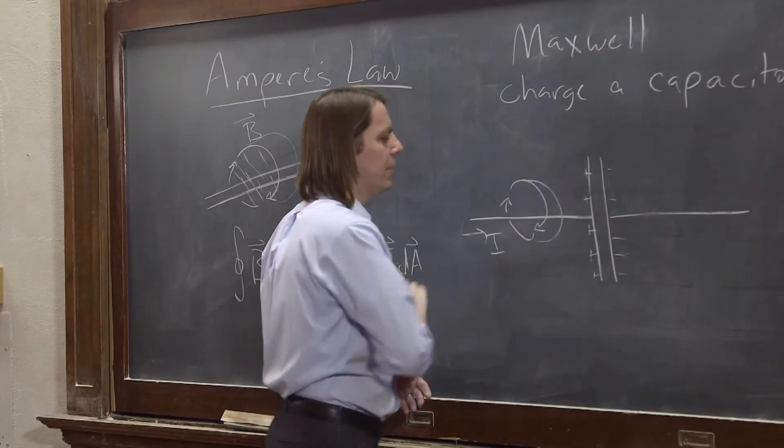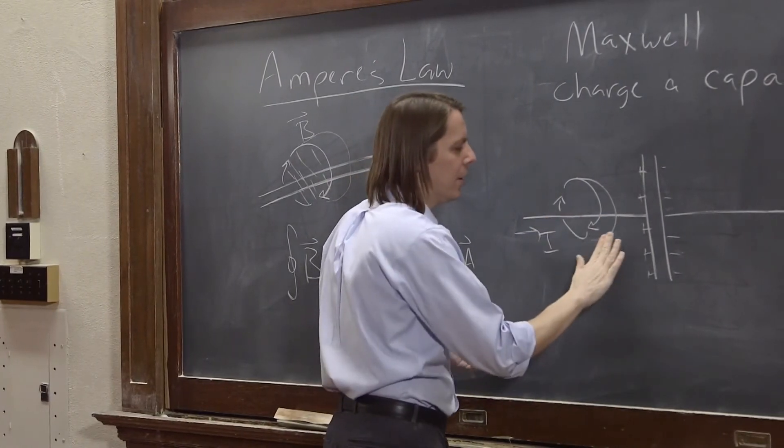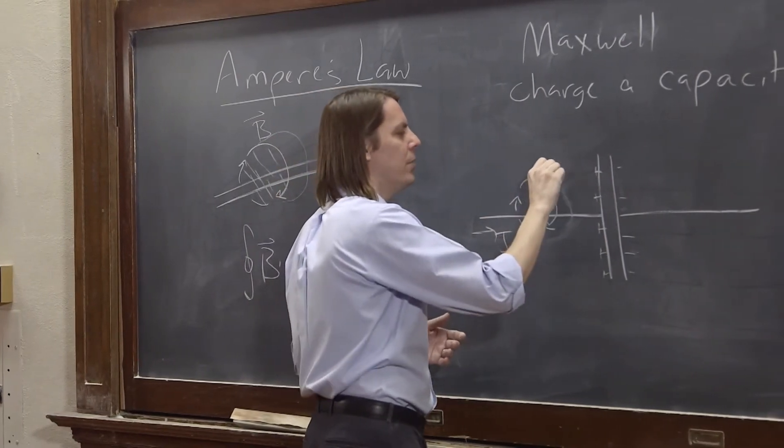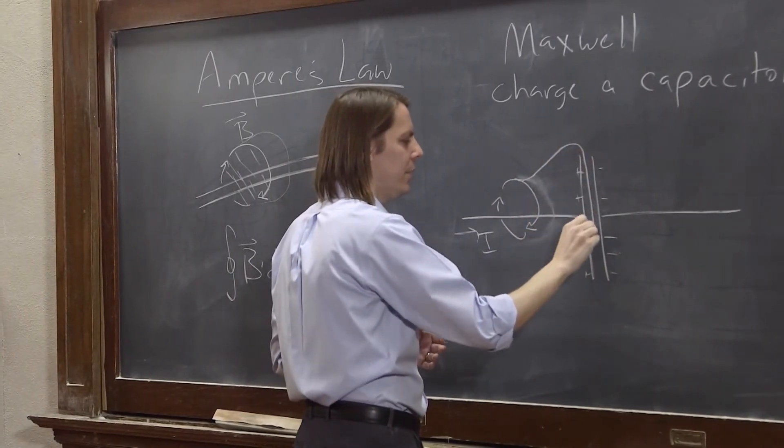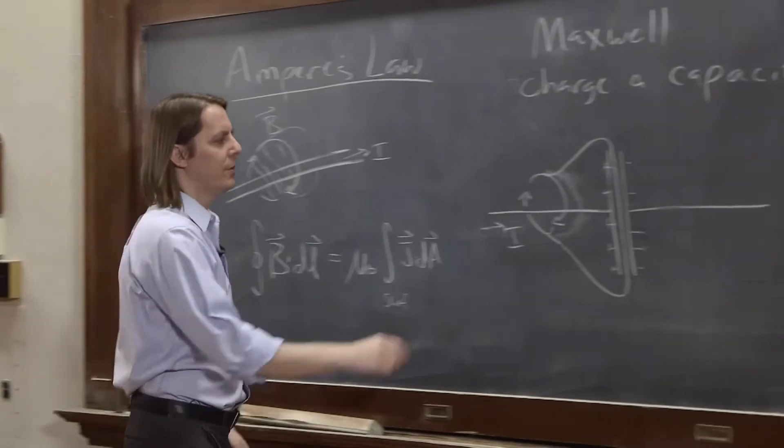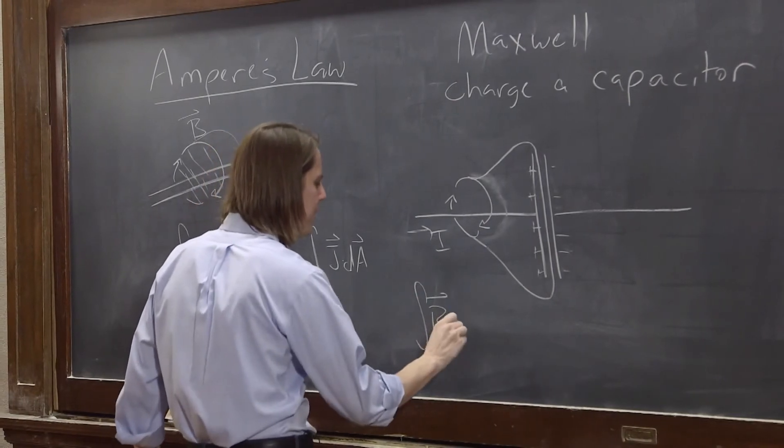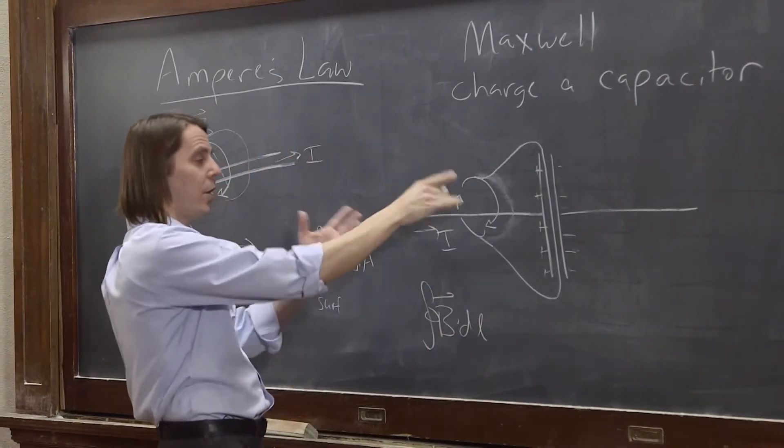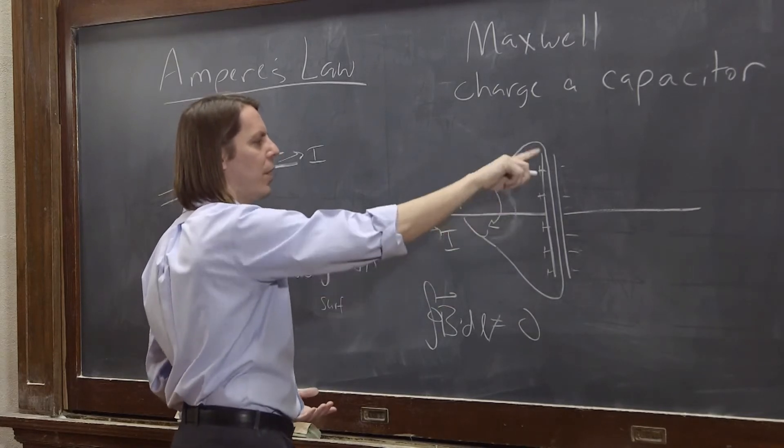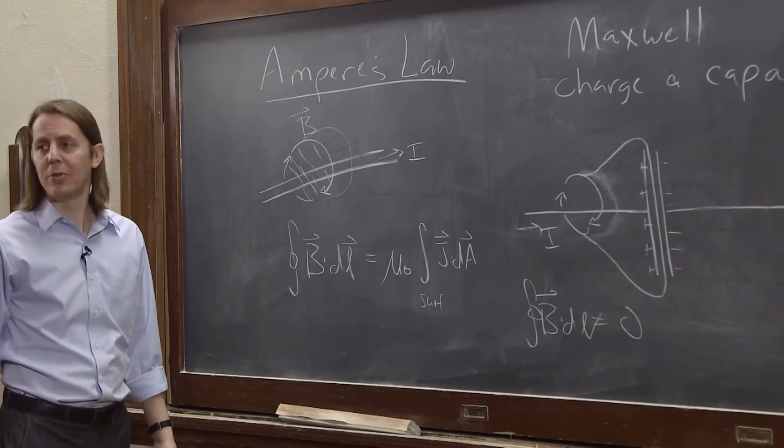But as Maxwell pointed out, the loop can go anywhere. It could go like here. Well, if it goes there, fine. The current can penetrate the area here, or it can penetrate it back here. Ah, but then Maxwell said, what if you drew the surface where the wire doesn't actually ever go? What if we drew the surface like this, right down the middle of the capacitor? That mathematically is legal because that is a surface that is bound by this loop. So if you do that, then you get a value for the integral of B dot DL around that loop. This has a non-zero value. But then it doesn't equal zero because here no current penetrates this entire surface. All the currents in the wire, the current stops when it gets to the plates. So this is a problem. And this told Maxwell that the Ampere's Law is incomplete. It's missing something.